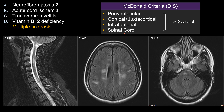In our particular case, you can see a spinal cord lesion, multiple periventricular lesions, a cortical lesion, and an infratentorial lesion. So in our case, we actually fulfill all four categories of the McDonald's criteria for dissemination in space.